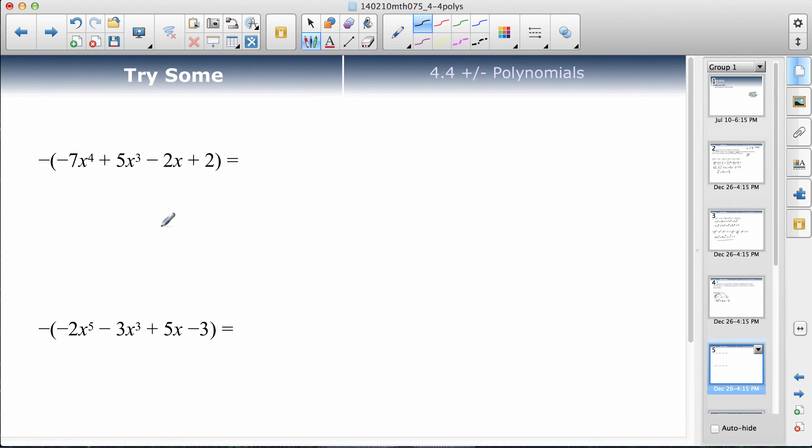Try these ones then press play. This will be 7x to the fourth minus 5x cubed plus 2x minus 2. This one will be 2x to the fifth plus 3x cubed minus 5x plus 3. You want to be careful and make sure that you change every sign that is in the brackets. Some people forget to do the first one.